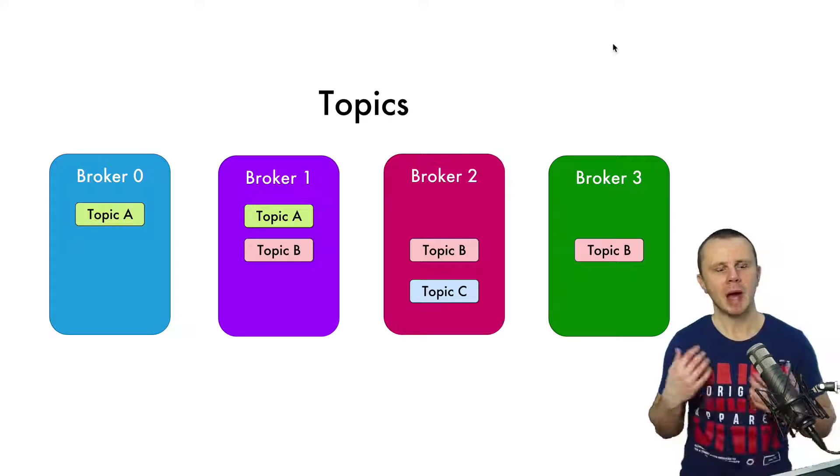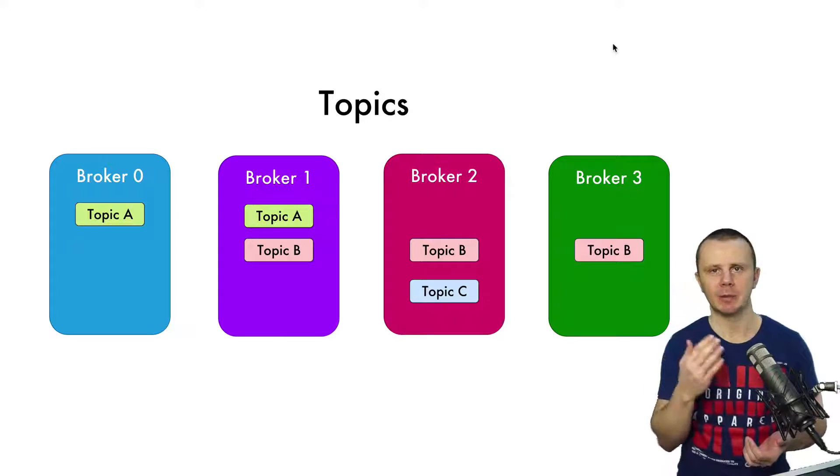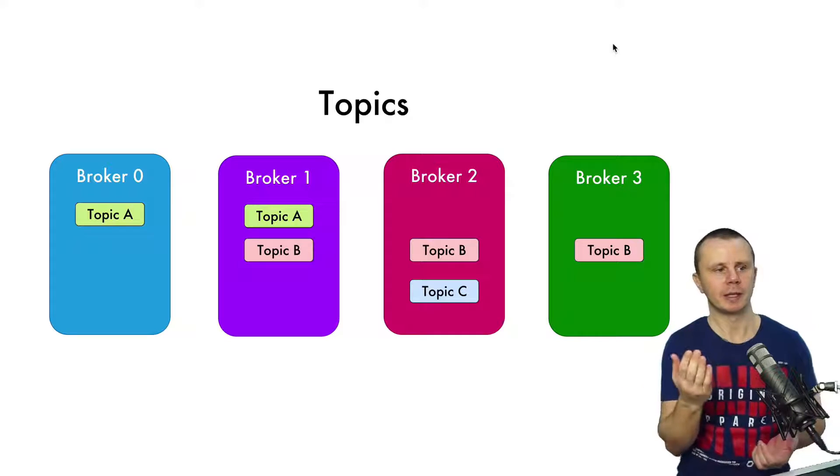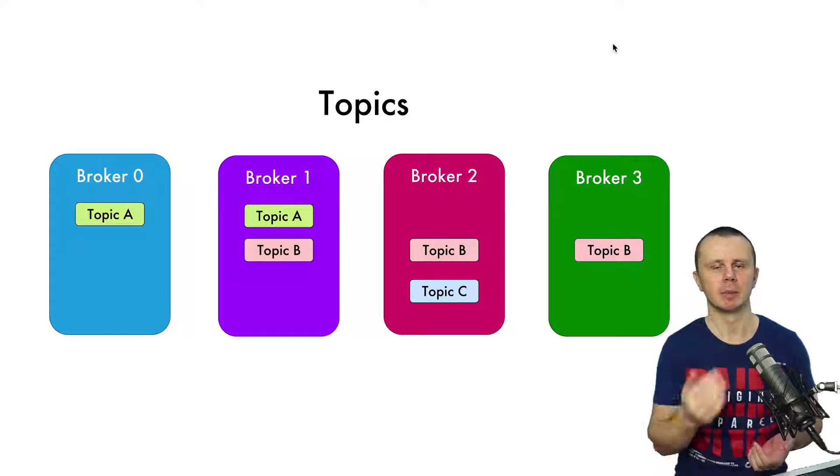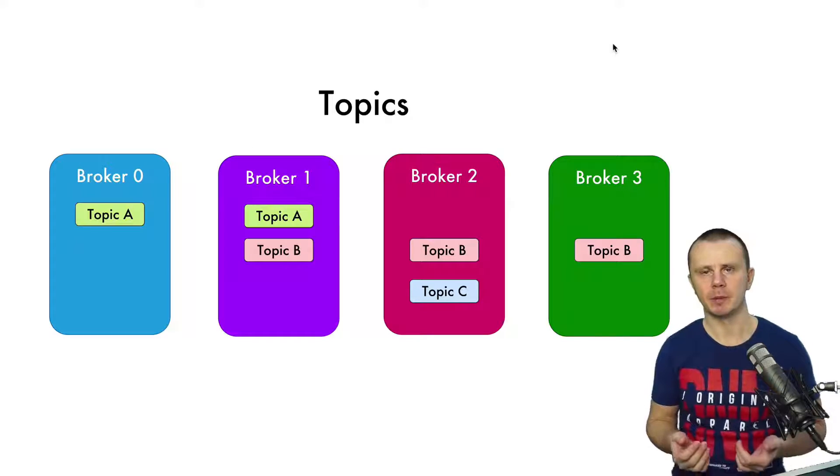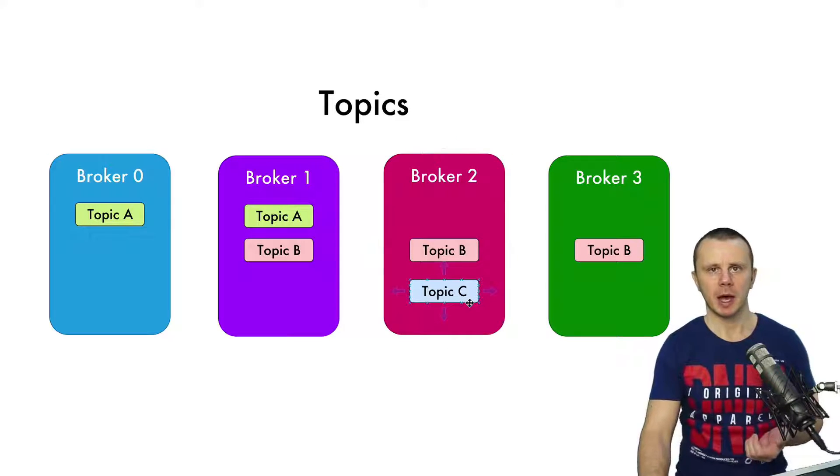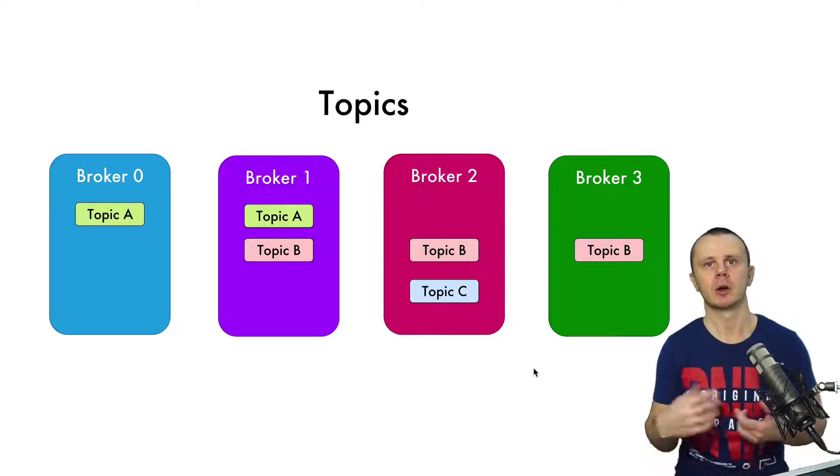Without Zookeeper, Kafka broker is not able to operate. So you may ask me a question: why do we need the same topic on different brokers? Why don't we just create a single topic per single broker? The answer is pretty simple: for fault tolerance. If broker 2 fails, all messages in Topic C will be lost, and no one will be able to produce new messages to Topic C or consume messages from this topic because the broker that was serving all messages inside of this topic is gone.